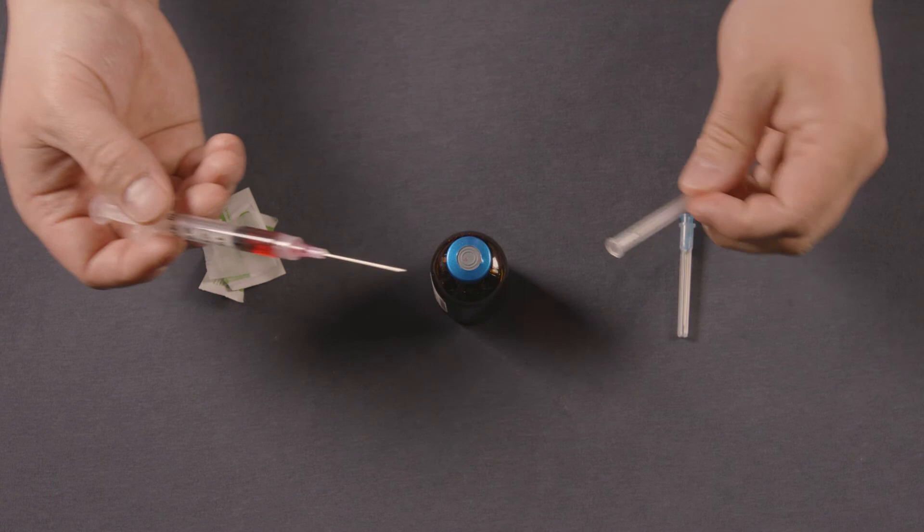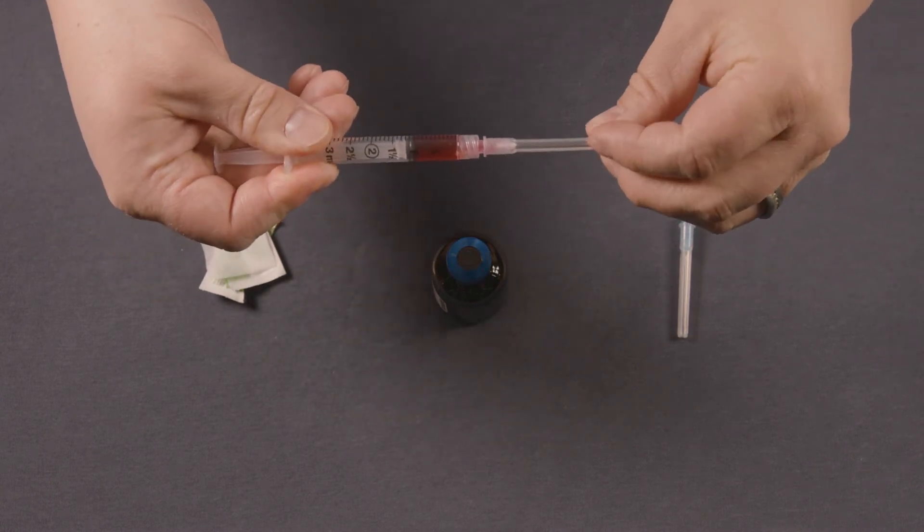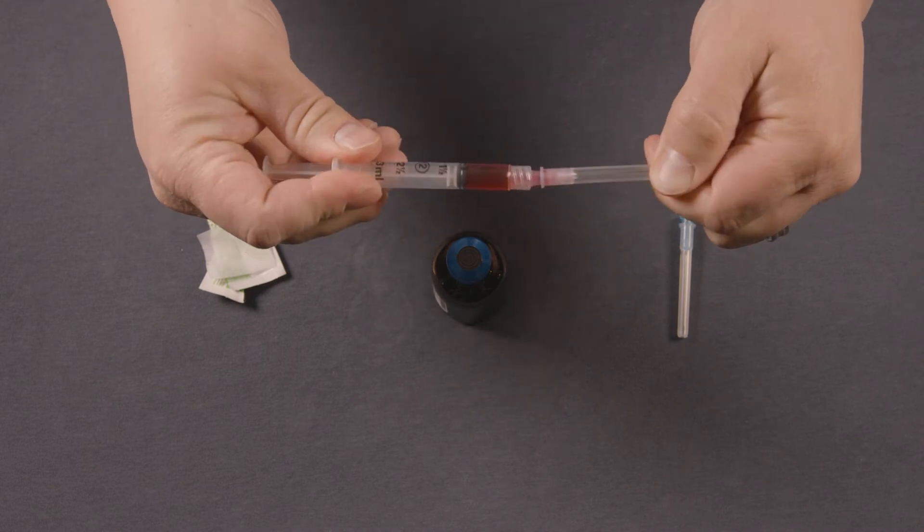Next you're going to pull it out. You can use the cap to recap and you're going to end up removing the drawing needle by just twisting it off.